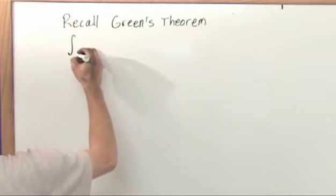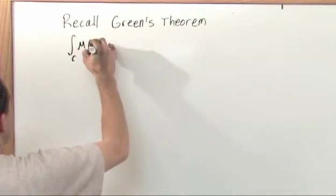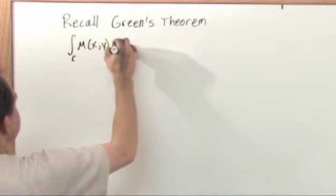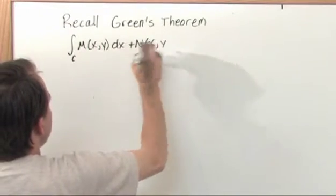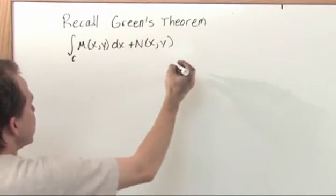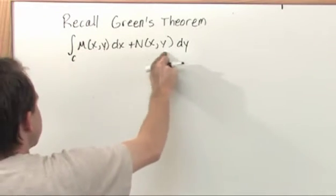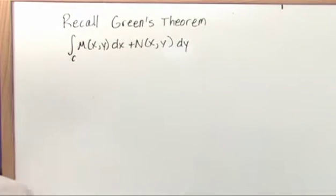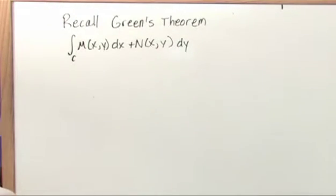Remember that basically what you were doing in Green's Theorem is you were integrating a vector field that only existed in the xy plane. That's why everything has x's and y's and no z's. You were basically doing this integral. This is a path integral in the xy plane of this vector field, and it's a closed path.